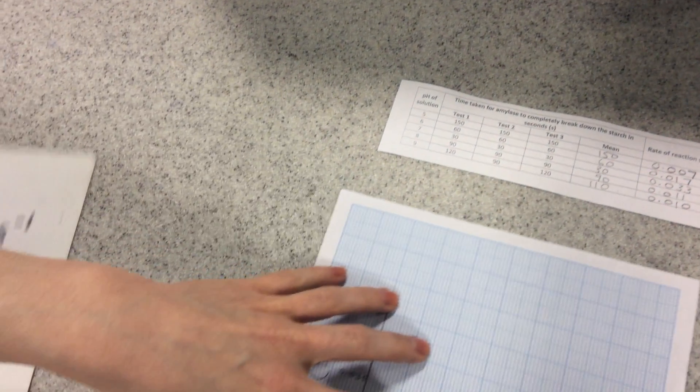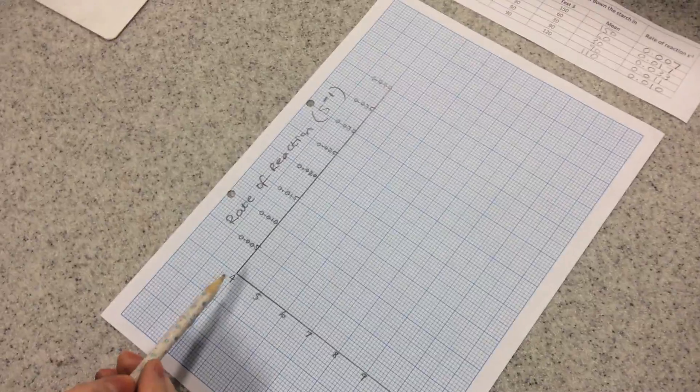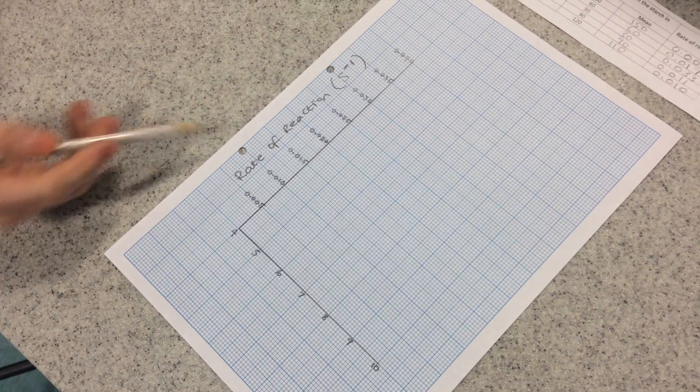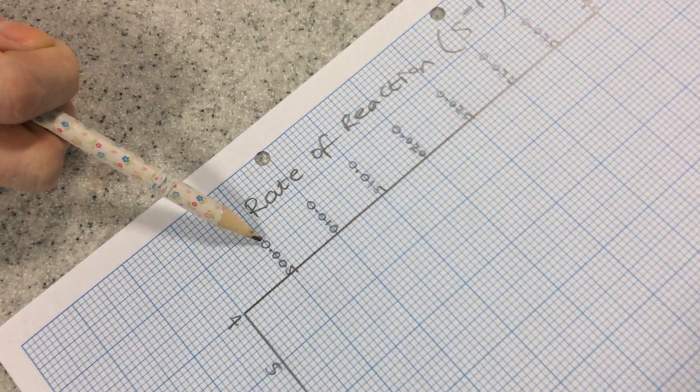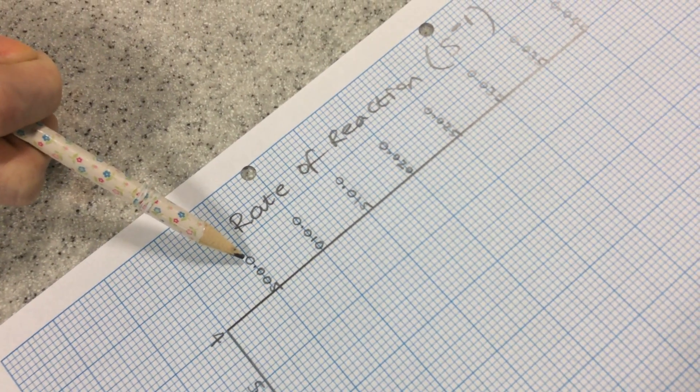So I'm going to plot those now on a graph, like so. I've started off, I've put my pH scale along the bottom, got my rate of reaction at the sides,